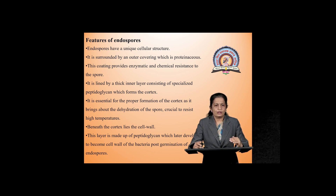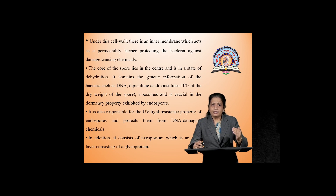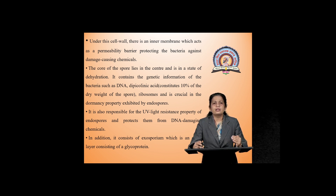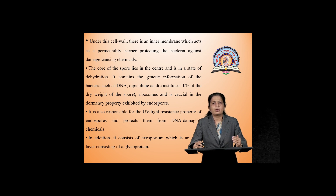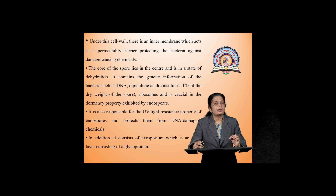Beneath the cortex there is the cell wall, and this cell wall layer is made up of peptidoglycan which, in a later stage of development, becomes the cell wall when spores germinate. Under the cell wall there is an inner membrane which acts as a permeability barrier — it does not allow any chemical to enter inside. Therefore spores are resistant to many chemicals because they cannot enter due to this permeability barrier. The core part of the spore — the central part — lies in a dehydrated state and contains the genetic material, that is DNA.